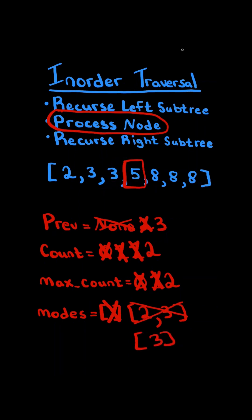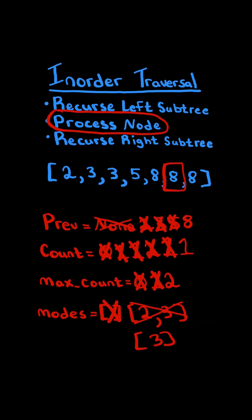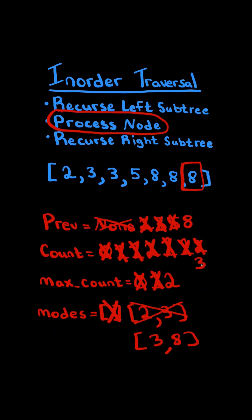We continue. Previous and current are different, so we reset the count to 1 to track the frequency of the new number, and update previous to the current value. Previous is again different than current, so we reset the count to 1 and update previous. Since previous equals current, we increment the count. Since count and max count are equal, we found another value tied with the current max frequency. Again they're the same, so we increment the count. Now the count is greater than max count, so we update max count since we found a new highest frequency, and reset the mode list to the current value since it now has the highest frequency. At the very end, we return the mode list.